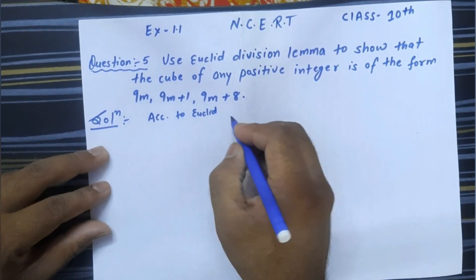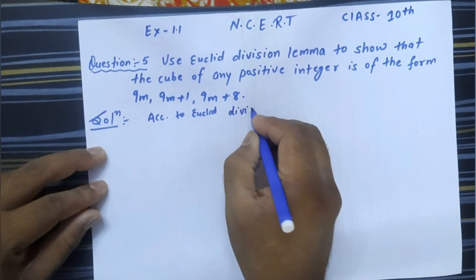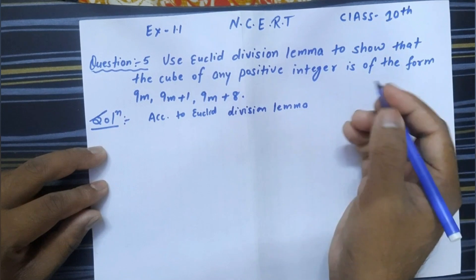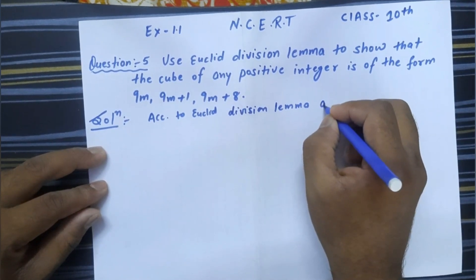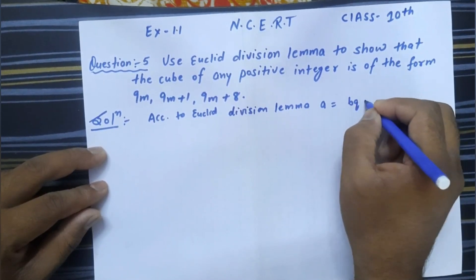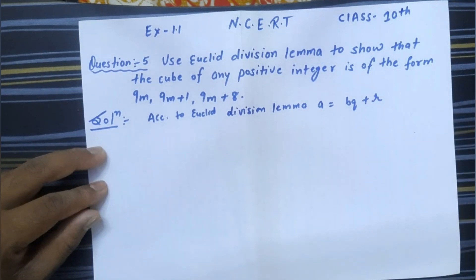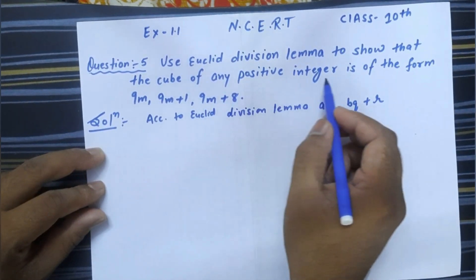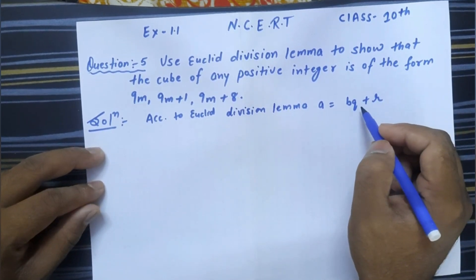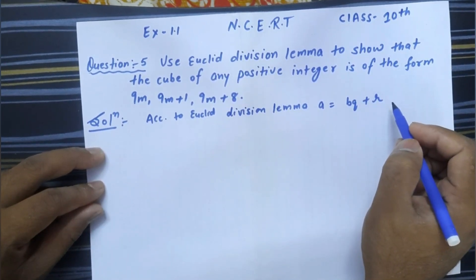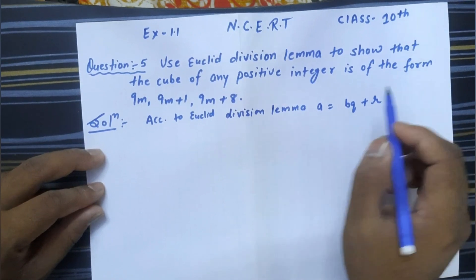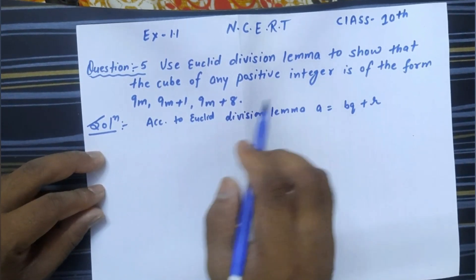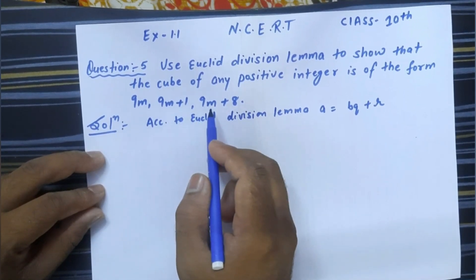As we know, according to Euclid's Division Lemma, any number 'a' can be written in the form bq+r. Here, 'a' will be any positive integer, 'b' will be the divisor, 'q' will be the quotient, and 'r' will be the remainder. We need to show that the cube of any positive integer is of the form 9m, 9m+1, or 9m+8.